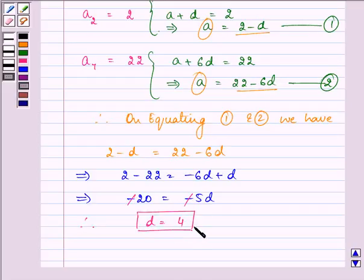Now, on substituting the value of D in any of these equations, we can have the value of A which means the value of A is 2 minus 4 that is minus 2.